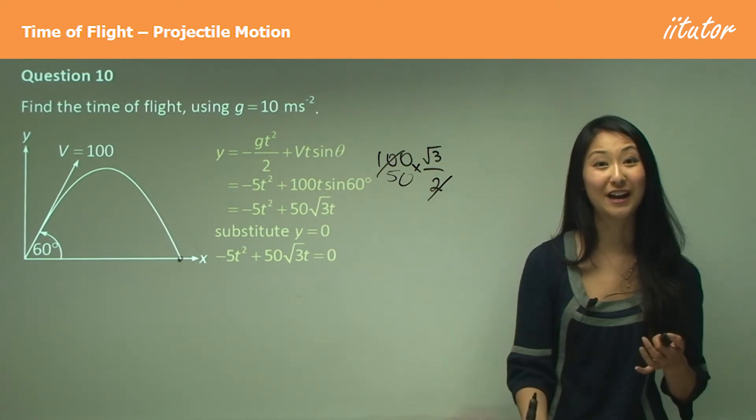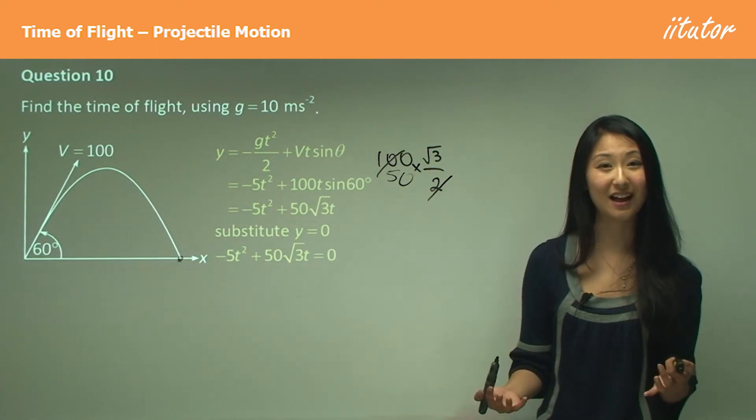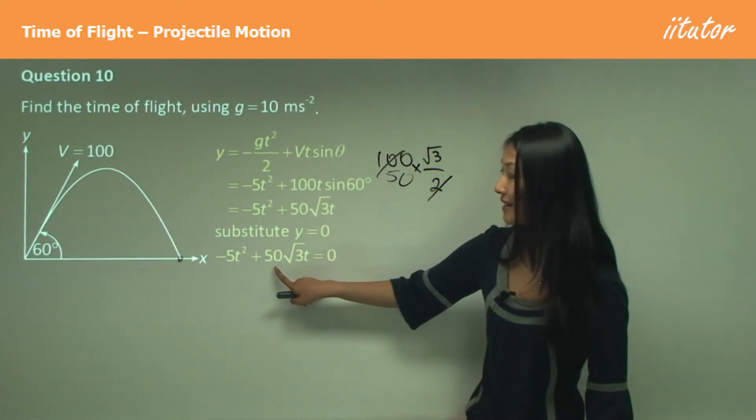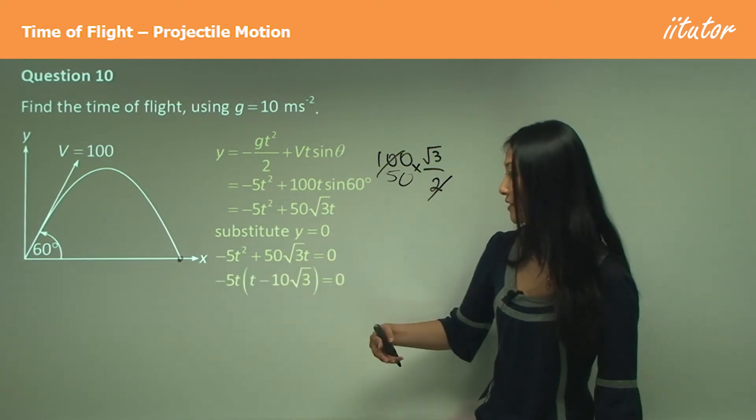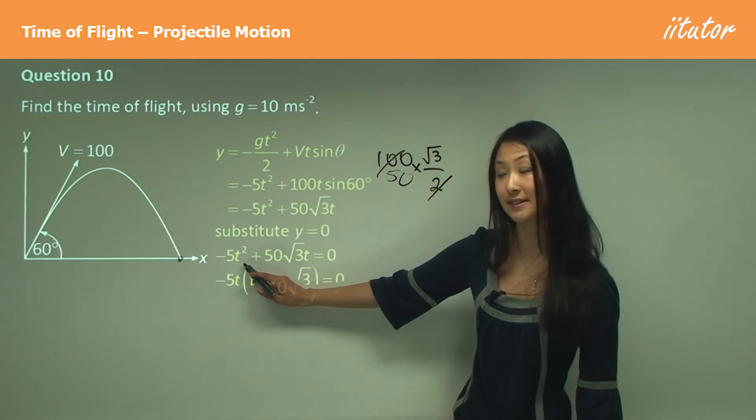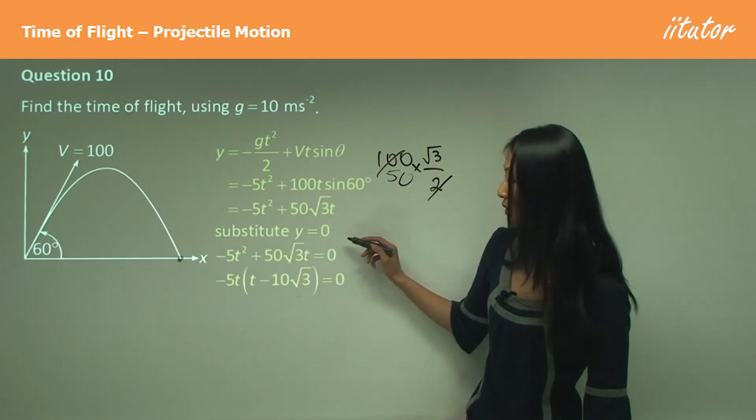Remember, we could factorize out the t, but don't just factorize out the t. Always have a look what else you can factorize out, because it just makes our lives easier. And you can see in this case you can also factorize out 5. So we factorize out -5t, and that here will leave us with just t, and here this will become -10√3.